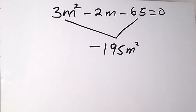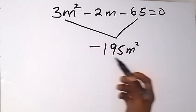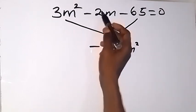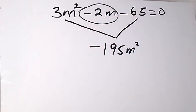So we have -195m². Then we are going to find the factors of this such that when we break it down and add it, we are going to get the number in the middle, which is -2m.